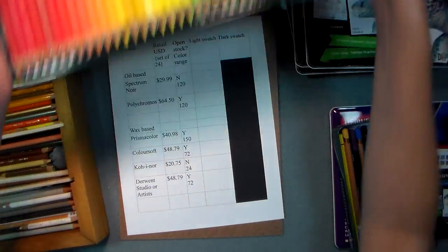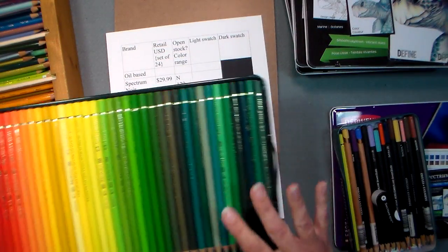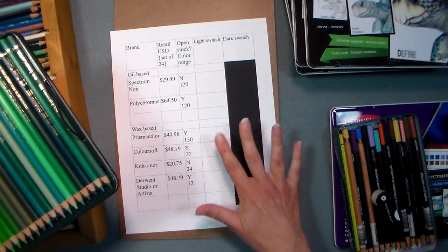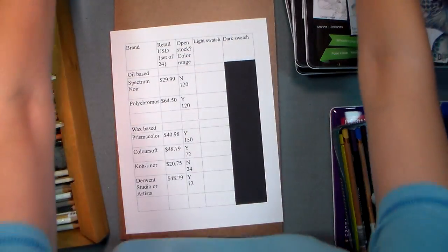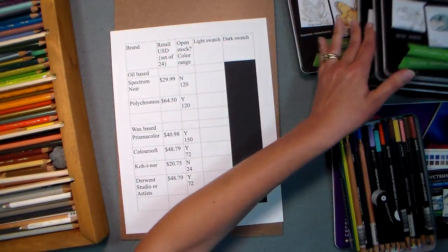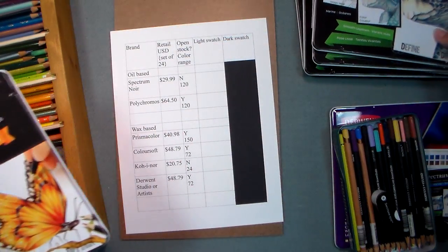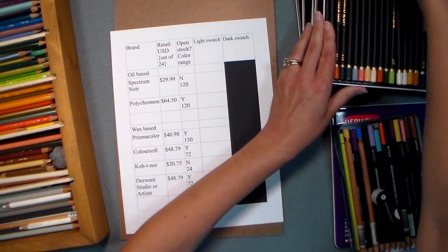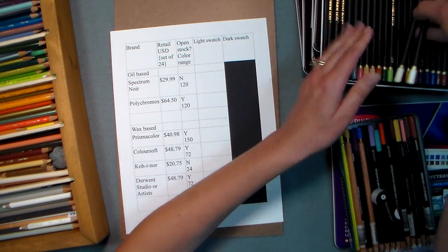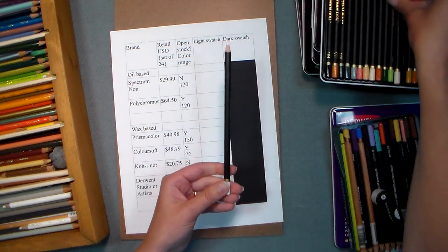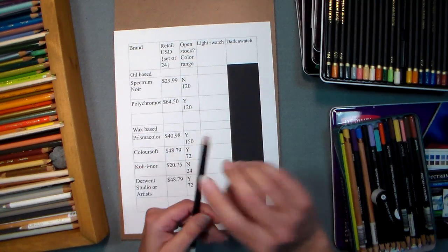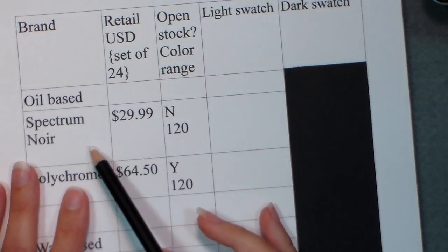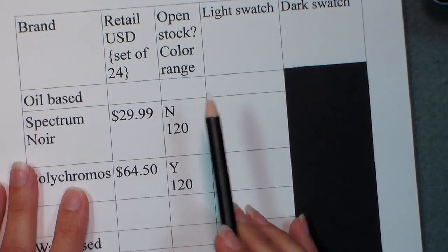Another brand of oil-based colored pencils would be the Faber-Castell Polychromos. These are beautiful pencils but they're twice the cost, these are $64.50 for a set of 24. I wanted to do an apples to apples comparison here because it could be very confusing to figure out what pencils to get. I'm going to compare the other oil-based colored pencils that are really popular right now too. Let me start off by using a number one, which is a white, so we could see how opaque our Spectrum Noir pencil is.